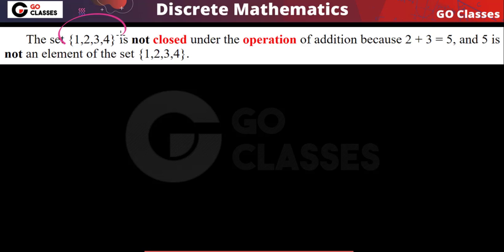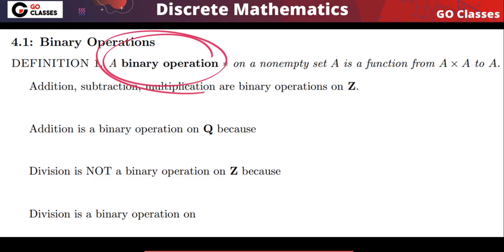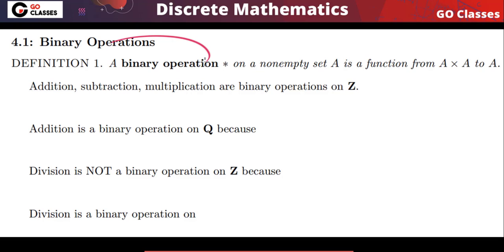This set {0,1} is not closed under addition because if you take 4, 4 or 2, 3 the result is not in the set. So a set is not closed under an operation if the result goes outside the set. Binary operation means it applies to two elements and must be closed. Binary operation is another name for closed operation.